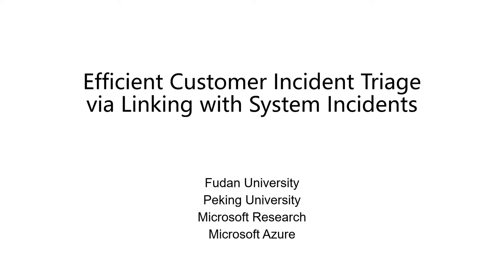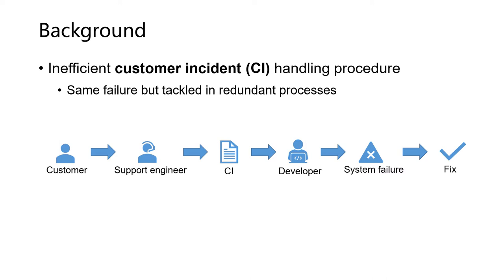Hello everyone. In this video, I will give a brief introduction to the paper Efficient Customer Incident Triage via Linking with System Incidents. When a customer encounters problems when using cloud services, he would report the problem to the support team. For the problems that cannot be easily fixed, the support engineer would raise a customer incident and send it to developers for further diagnosis.